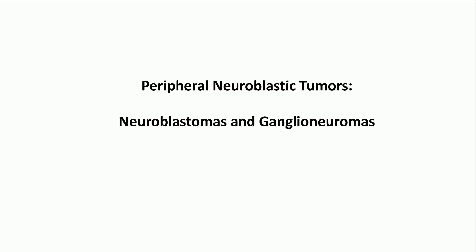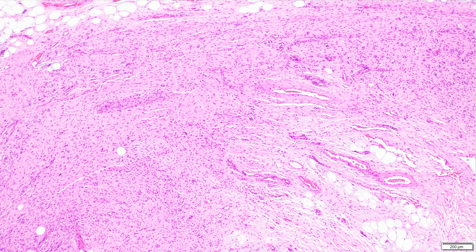Today we're going to be talking about neuroblastomas and ganglioneuromas, which are part of a general category called peripheral neuroblastic tumors. But let's start off with an example. Here is a low power view of a tumor. And if we look in areas here and there, we can see that there are these kind of Schwann cell-like regions. In addition, we can also see that there are some adipocytes here, so we know that we're somewhere in soft tissue. And this particular patient, it was retroperitoneum, which is a very, very common location for this entity.